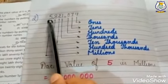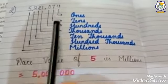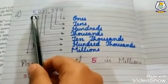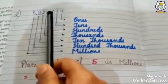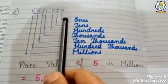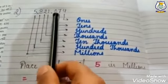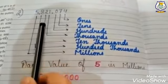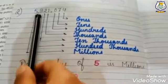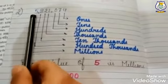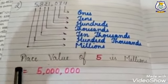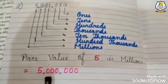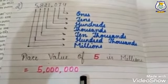The place value of five is ten thousand — we write it as 50,000. In the second question you also have to find the place value of five. The number is 5,825,174. Zero is in hundreds place, one is in thousands place, two is in ten thousands place, eight is in hundred thousands place, then five is in the millions place. So the place value of five is one million — we write it as 5,000,000.